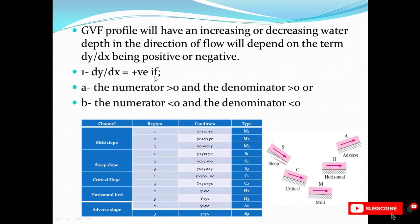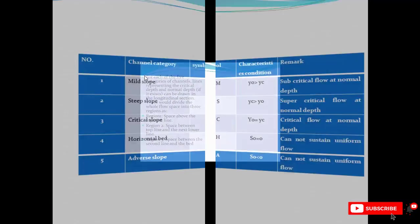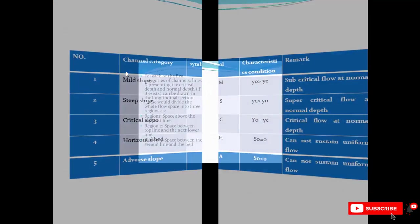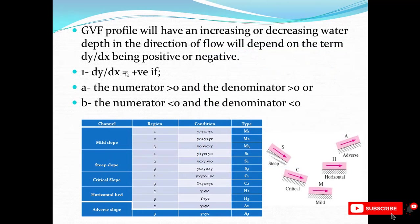dy/dx is positive when both the numerator and denominator are positive, or both are negative, where the numerator is (S₀ - Sf) and the denominator is (1 - Q²T / gA³). For mild slope, the three regions are separated by y₀ and yc: region 1 if y > y₀ and y > yc, region 2 if y is between them, and region 3 if y is less than both. For steep slope, the regions correspond similarly to y₀ and yc, and the same logic applies for other slope types.